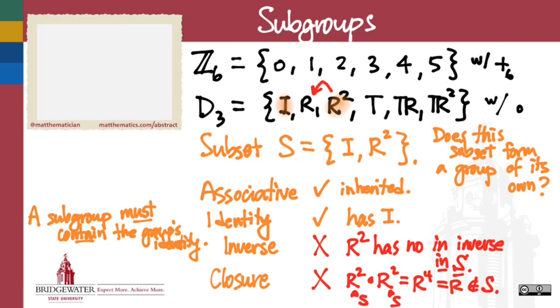So closure got violated. Inverse got violated. So this example of a subset is a subset of elements, yes, but not every subset of elements gets to be a subgroup. In order to be a subgroup, we have to have all four of these properties satisfied, just like we did for a regular group. So what we'll say is here that S is not a subgroup of D3.